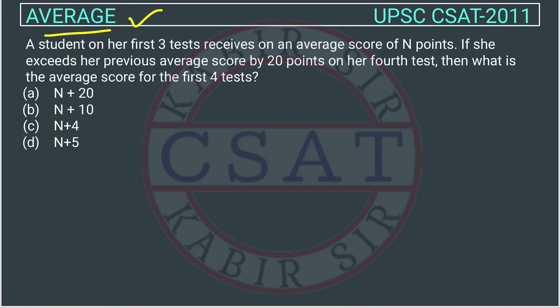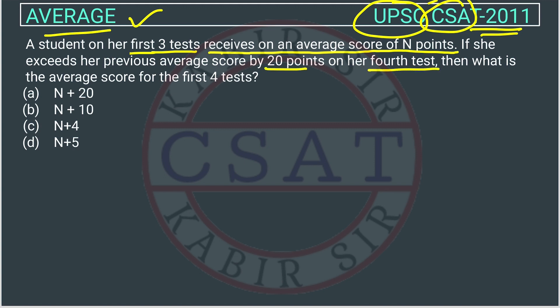This is a question on averages asked in the UPSC CSET exam in 2011. A student on her first three tests receives an average score of n points. If she exceeds her previous average score by 20 points on her fourth test, what is the average score for the first four tests?